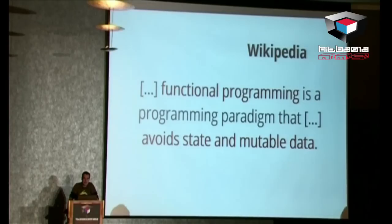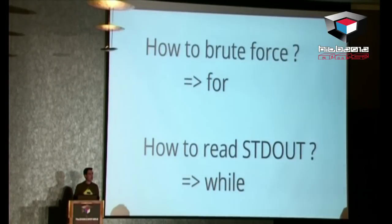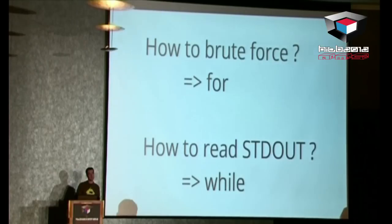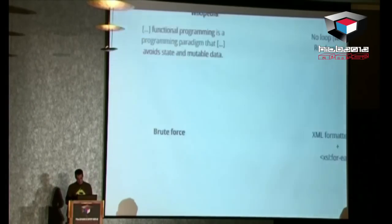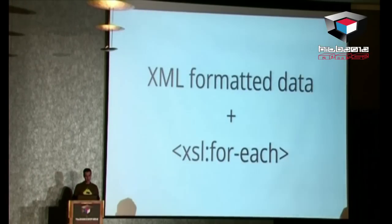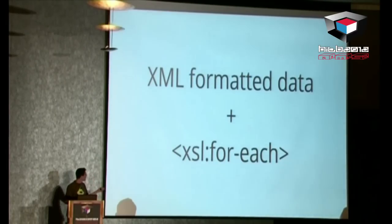Now we speak about basic XSLT constructs. The problem with XSLT is that it's a functional language, which means by construction you cannot create state and you cannot have writable variables. From an exploitation point of view this is a big problem because we can't create a traditional for or while loop and every variable is write-once. But we have specific objectives: we want to do brute force — needing a for loop — and we want to execute commands and get output — needing a while loop. The solution for a for loop is to put the data in XML and use xsl:for-each for processing.